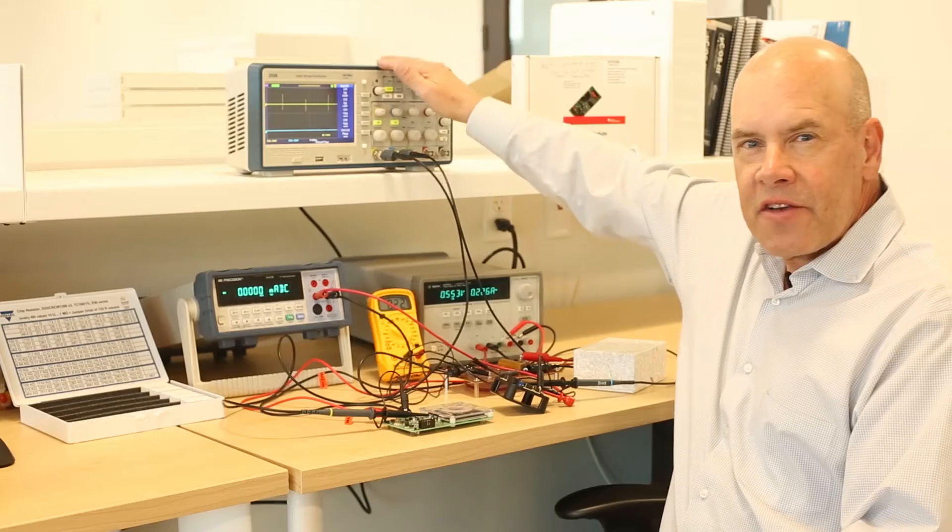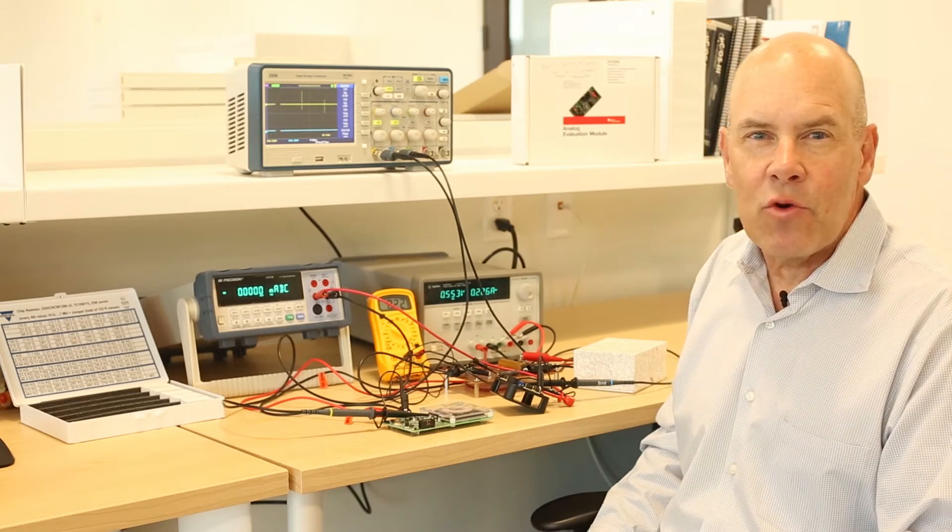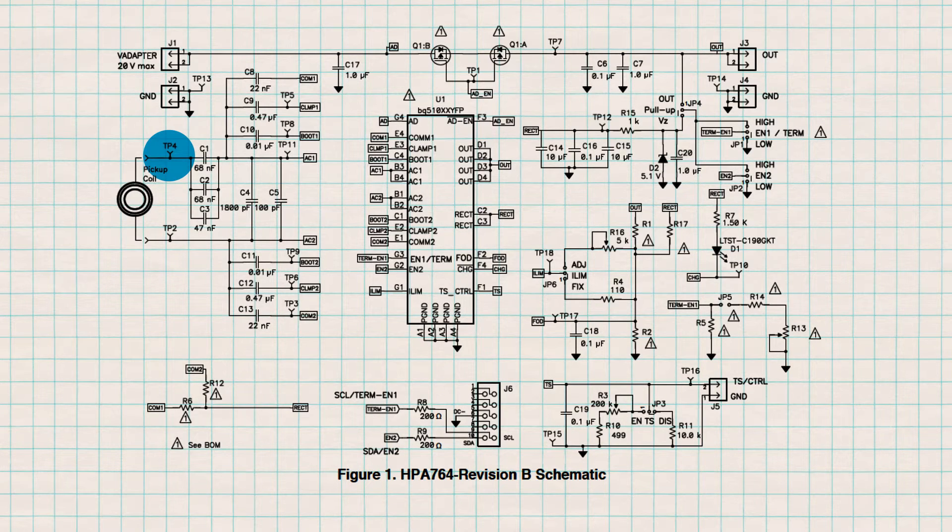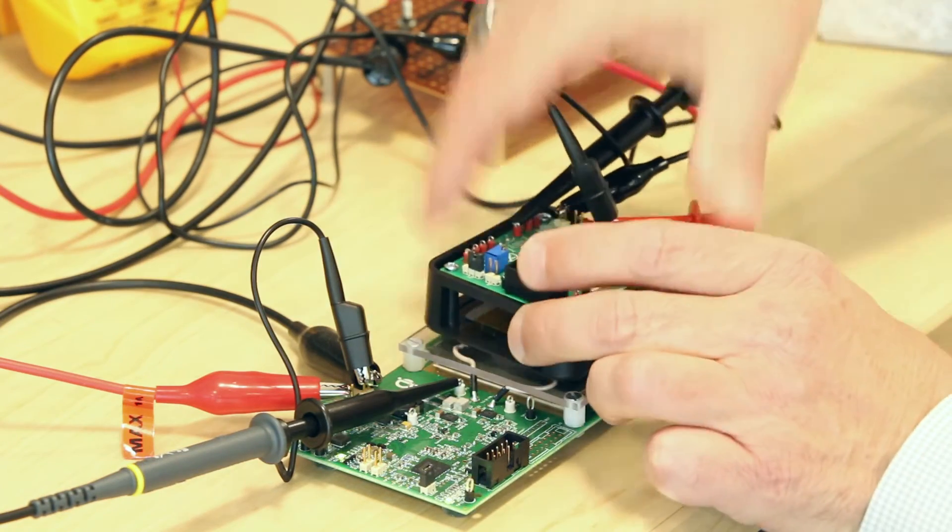Channel 2's probe is connected to the receiver coil on the BQ51050B board. We are looking at test point 4, TP4, on the receive evaluation board. Since the receiver is not being powered, there is no output. Now we'll put the receiver on top of the transmitter and align the two coils.